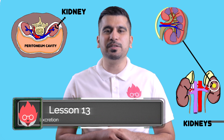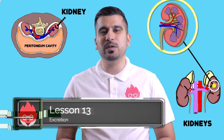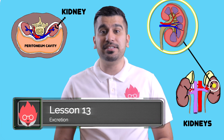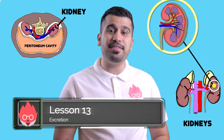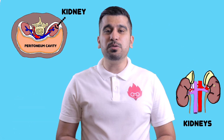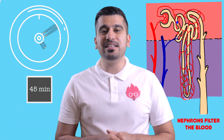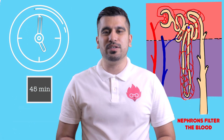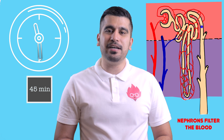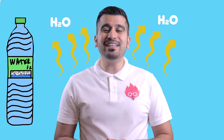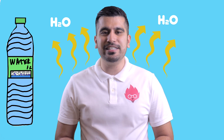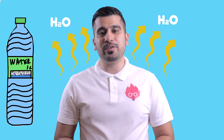Around 10cm long, the human kidneys are located beneath the diaphragm and behind the peritoneum. The kidneys are able to filter the entire water content of the blood every 45 minutes, which is approximately 151 litres. Of this amount, only one litre is excreted; the remainder is actually reabsorbed back into the blood.